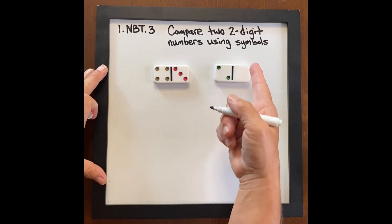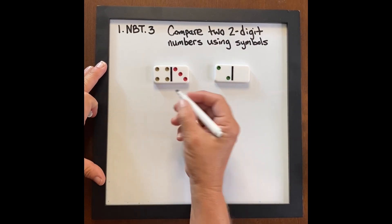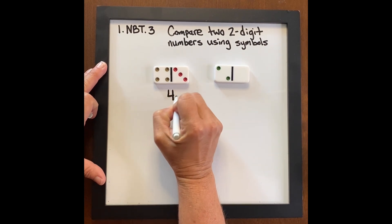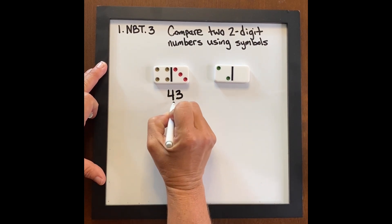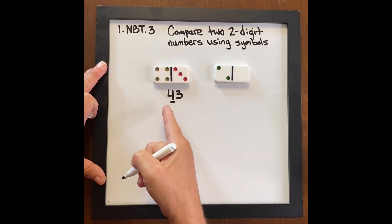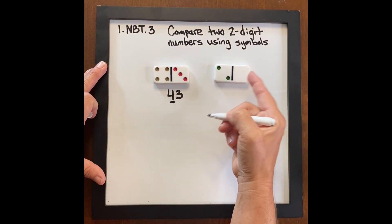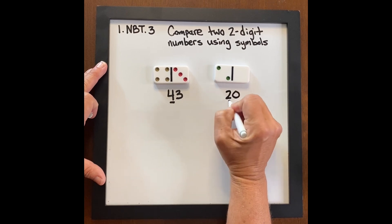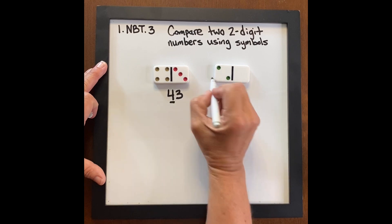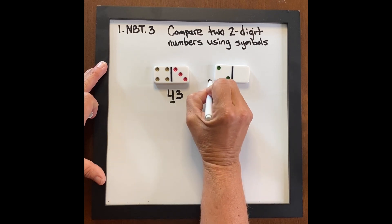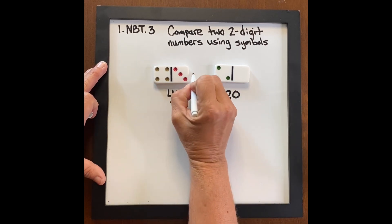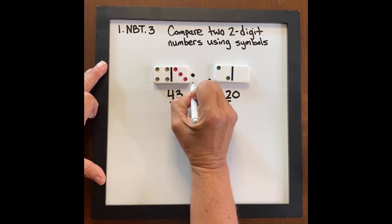Comparing two-digit numbers using symbols — we're going to use dominoes. Here we have four tens, three ones: 43. I write it this way so students understand the value and concept. 43 has four tens. Two tens, zero ones forms 20. 20 has less value than 43, so it gets one dot. 43 is greater value than 20, so it receives two dots.